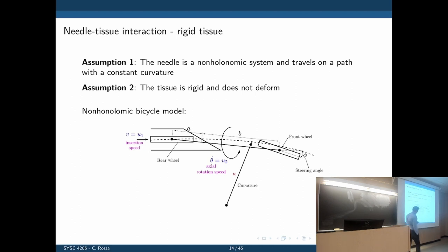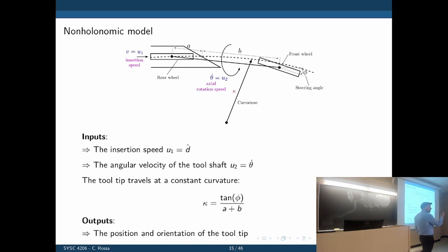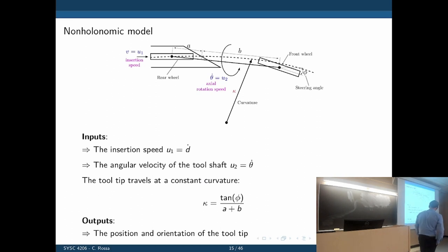This is called a non-holonomic bicycle model. The curvature is fixed and depends on the bevel of the needle — it always moves at a constant curvature. To control the curvature, you just control the speed of rotation of the base. We have two inputs: insertion speed and angular velocity of the tool shaft. The curvature of deflection is the tangent of the steering angle phi divided by a plus b.